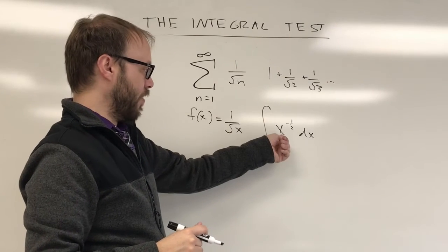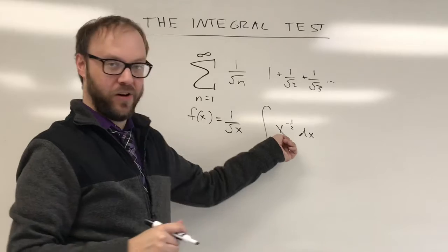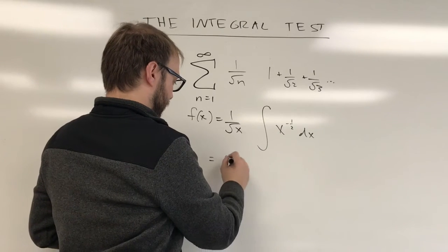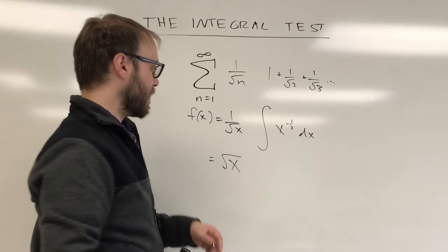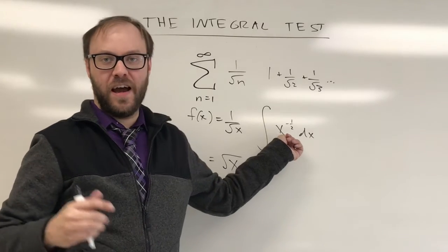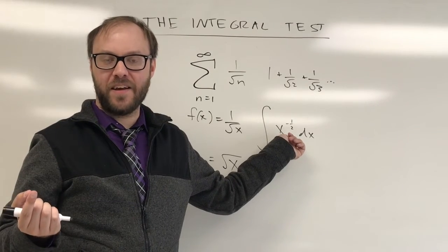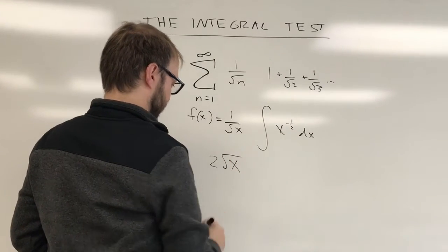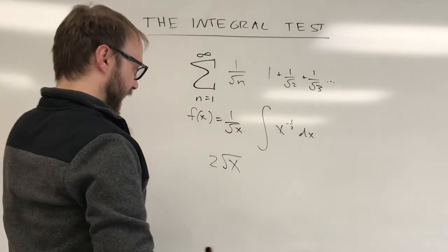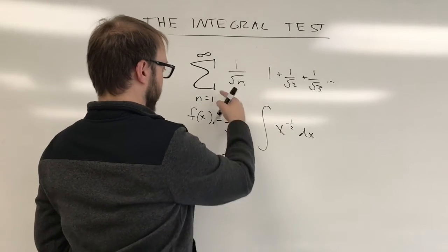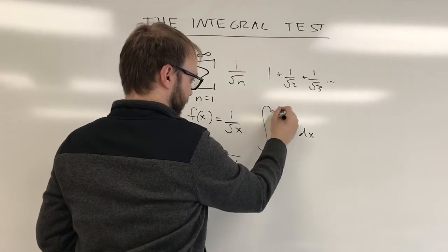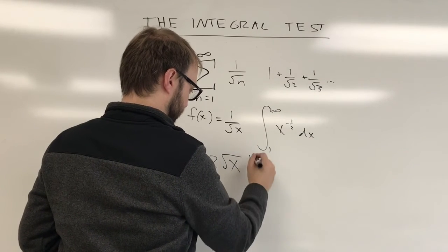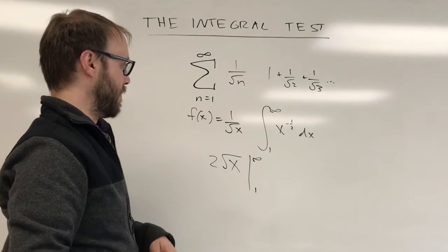So raise your power by 1. That becomes x to the 1 half power. x to the 1 half power, of course, is the same thing as radical x. And you're going to divide by the new power. The new power is 1 half. You're dividing by 1 half, which is the same thing as multiplying by 2. So this is going to be the same thing as 2 radical x. We're going to be evaluating it between 1 and infinity.